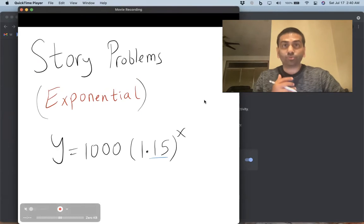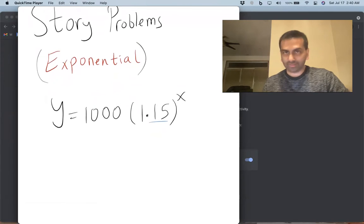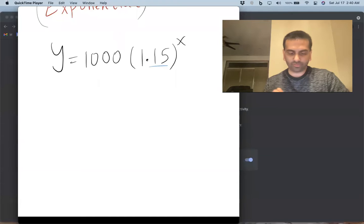In this video, we'll talk about some story problems involving exponential functions. Let's say that you're given that in a given town, the number of COVID patients starts with 1,000 and grows by 15% every month.